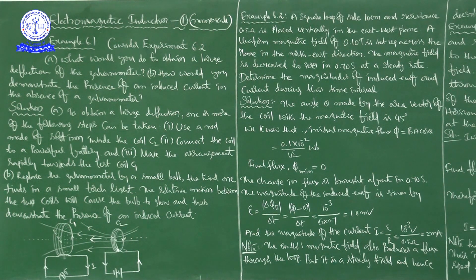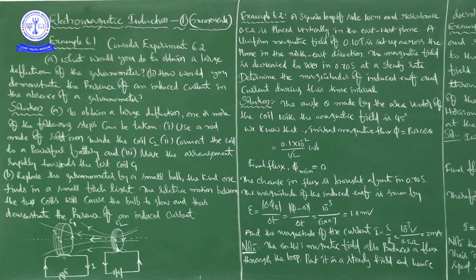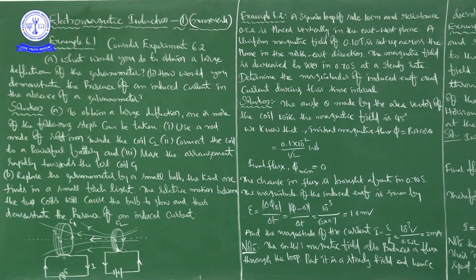Right. First problem, Example 6.1. Consider experiment 6.2. There are two things being asked. One is: what would you do to obtain a large deflection of the galvanometer? And B is: how would you demonstrate the presence of an induced current in the absence of a galvanometer?